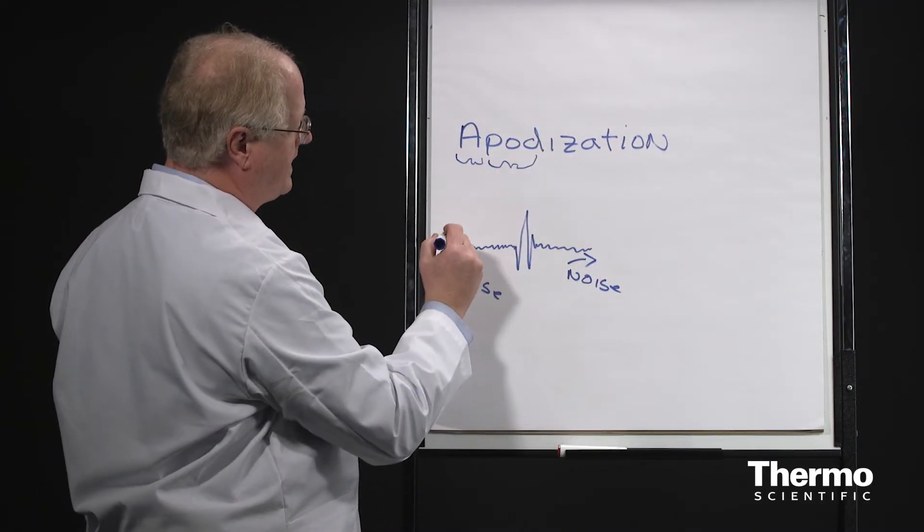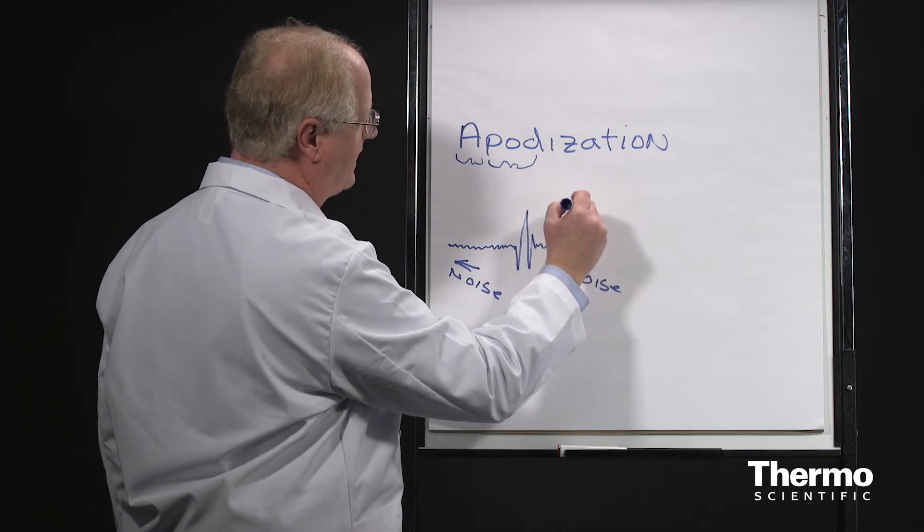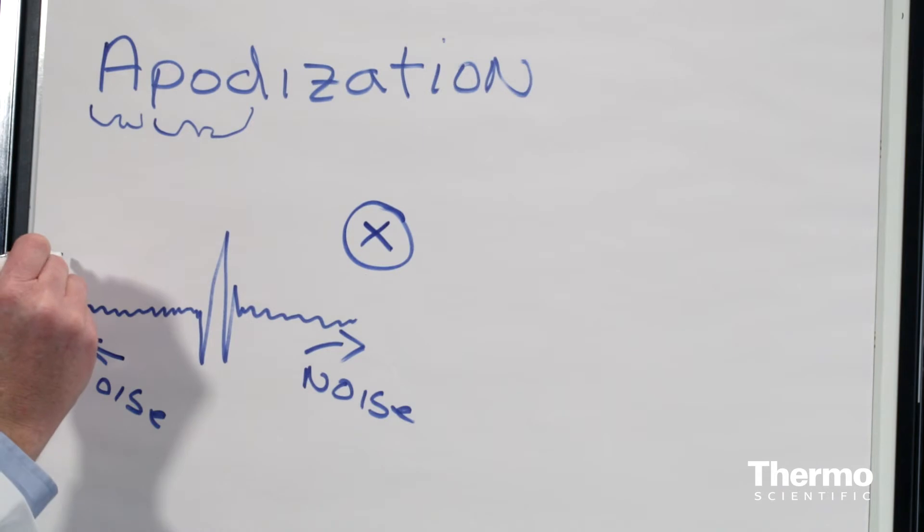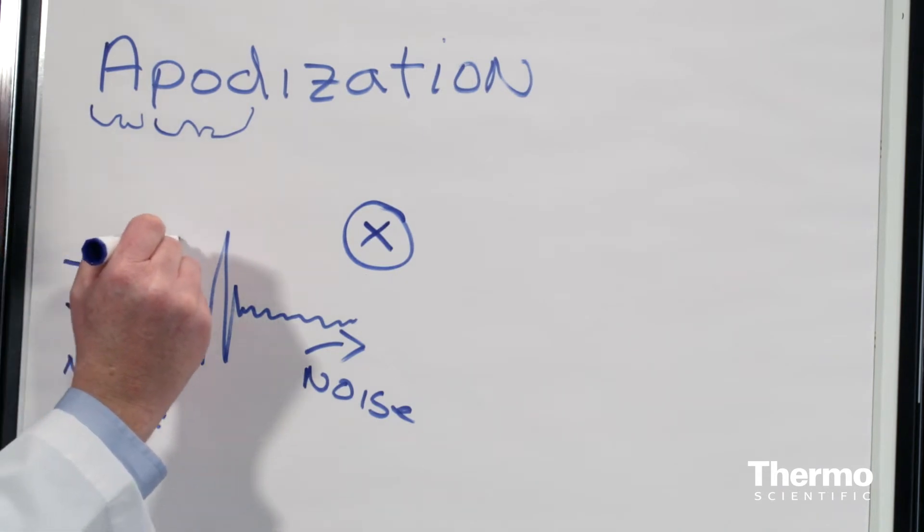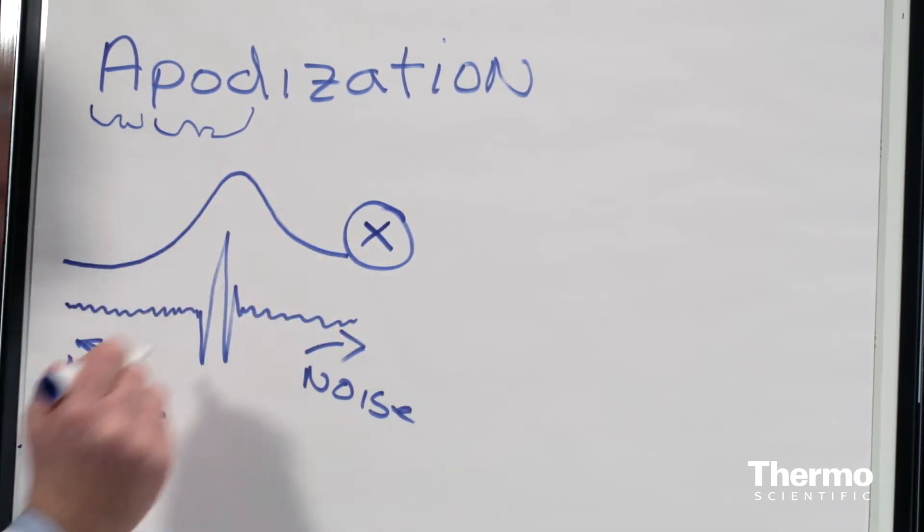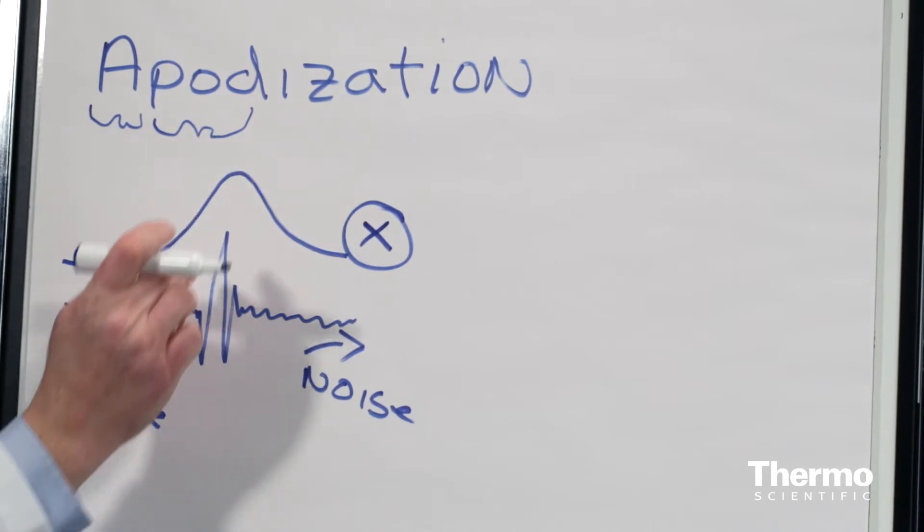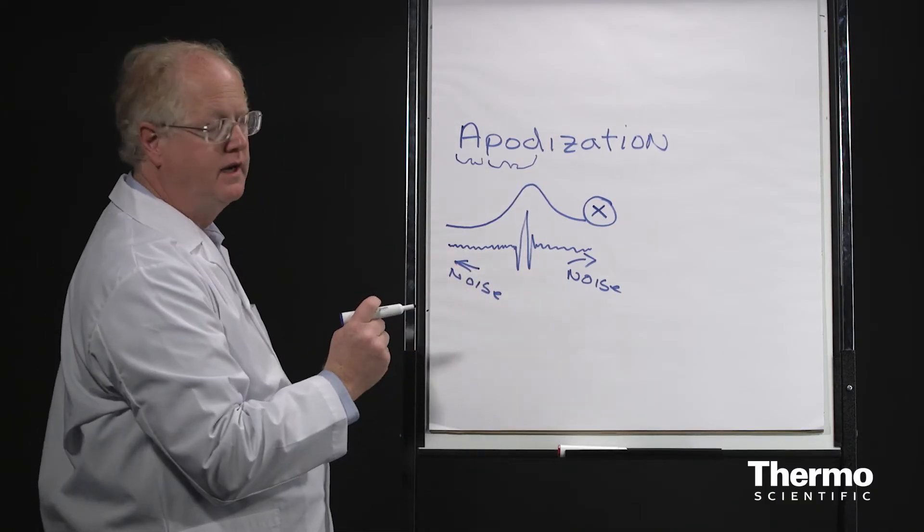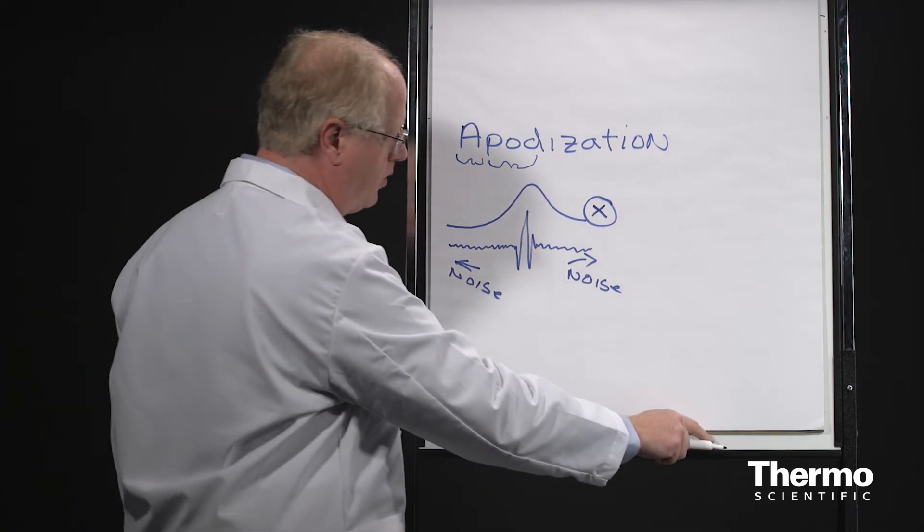So what we do with the apodization function is we multiply this thing, it's actually called a convolution, but we multiply by a function that looks like this. And when you multiply that times that, what it does is it zeros out these wings. It makes the noise go away.